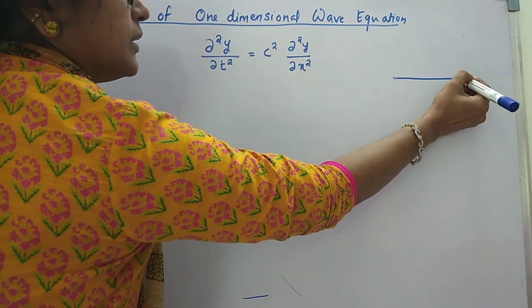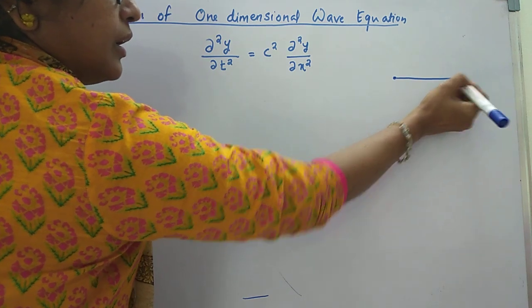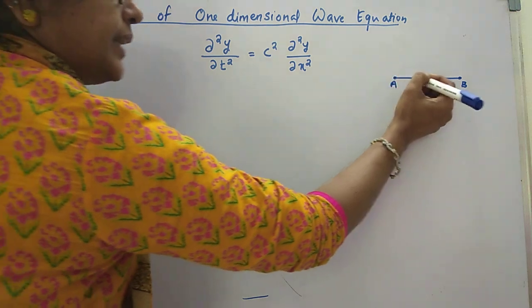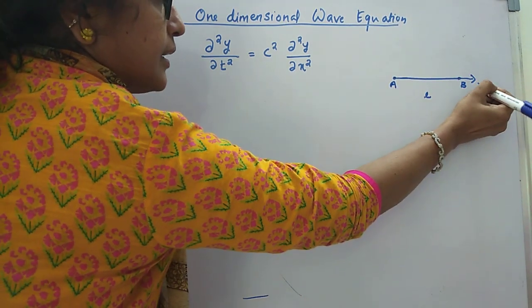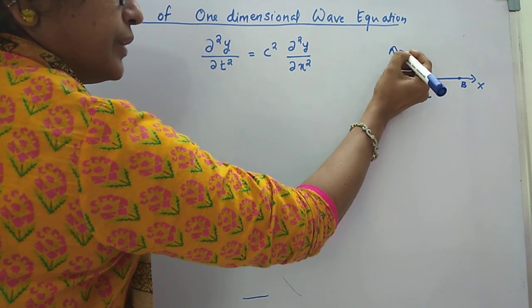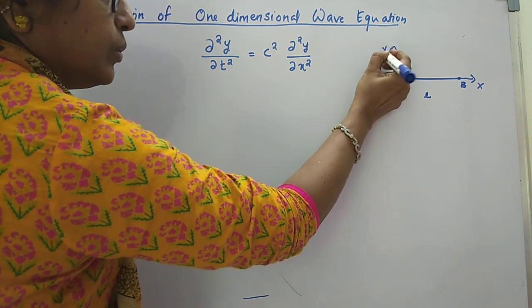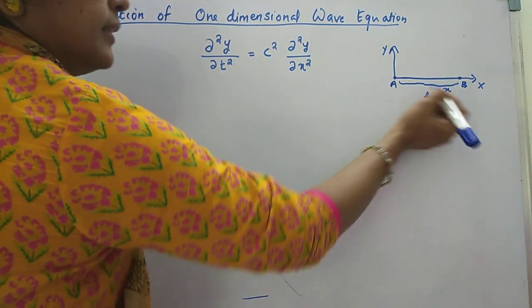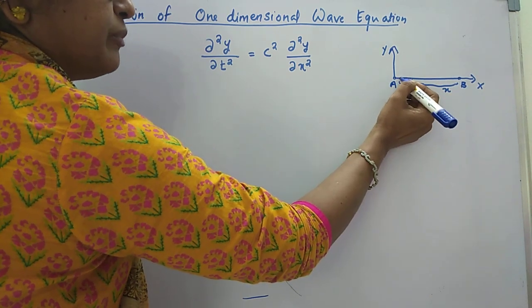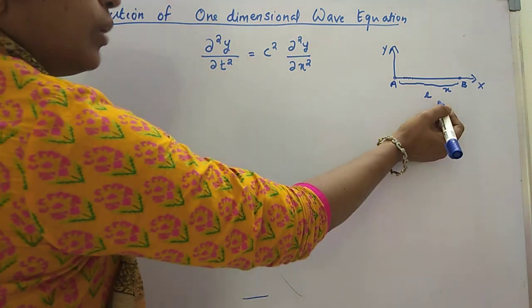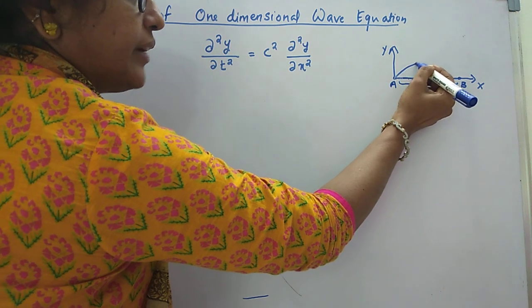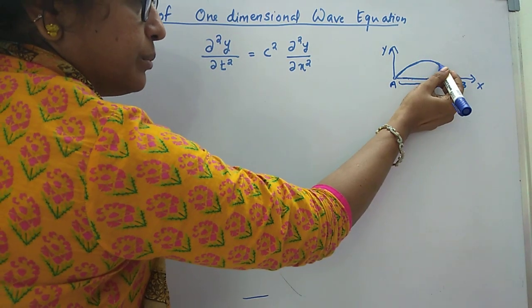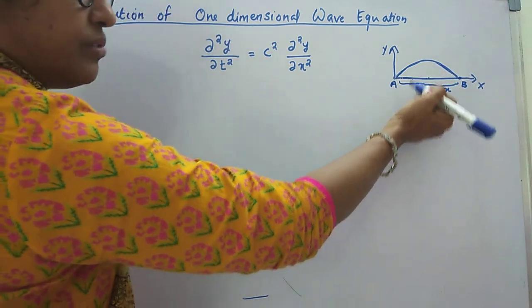Suppose that an elastic string is tightly stretched and fixed at both ends A and B, which is of length L. Let us take the string along the x-axis, with the initial fixed point at the origin and the y-axis perpendicular to it. The distance x gives the distance of each point on the string from its initial end. Suppose we are stretching the string and releasing it from a point, which will form a transverse vibration.